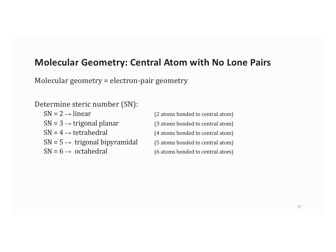Here are the five steric number categories. If your steric number is two, you're linear — two atoms bonded to a central atom. If it's three, trigonal planar — it could be two atoms and a lone pair. Four is tetrahedral, five is trigonal bipyramidal, and six is octahedral. These are based on the shape that the molecules take, and to really see it, you have to build. But we're going to try our best.